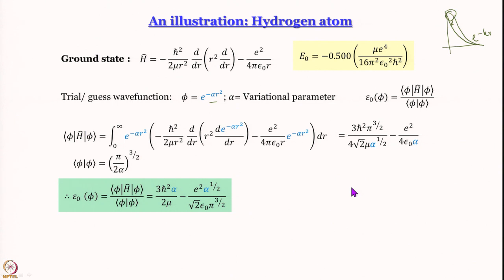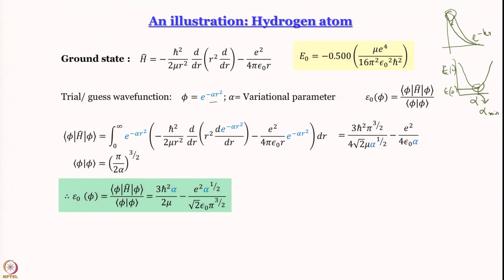I keep changing the value of α and look for the minimum of ε₀. Plotting ε₀ vs. α, I seek the value of α where ε₀ is minimized. From high school calculus, to find the minimum of a function, I differentiate and equate to zero — the slope at a minimum is zero.